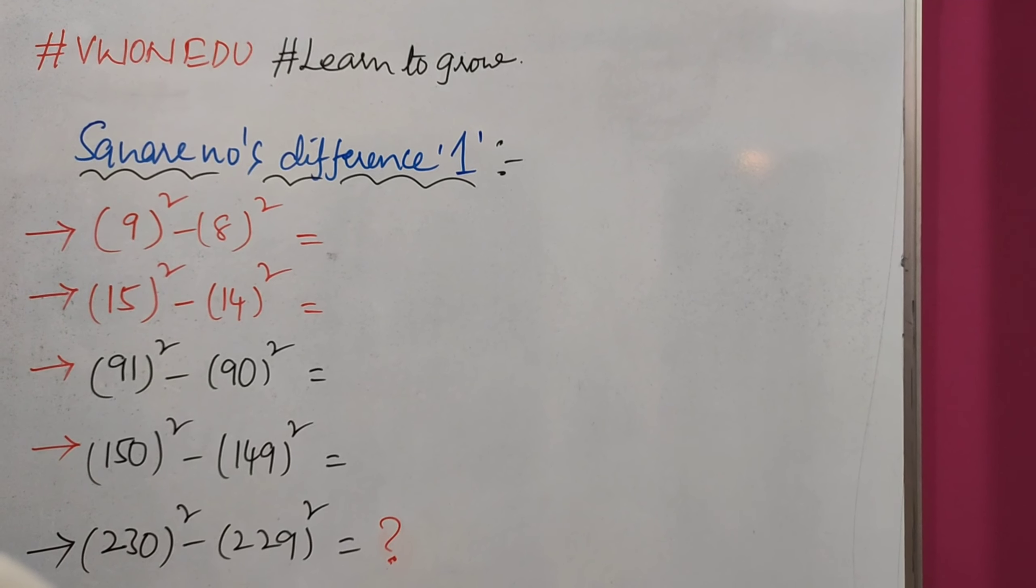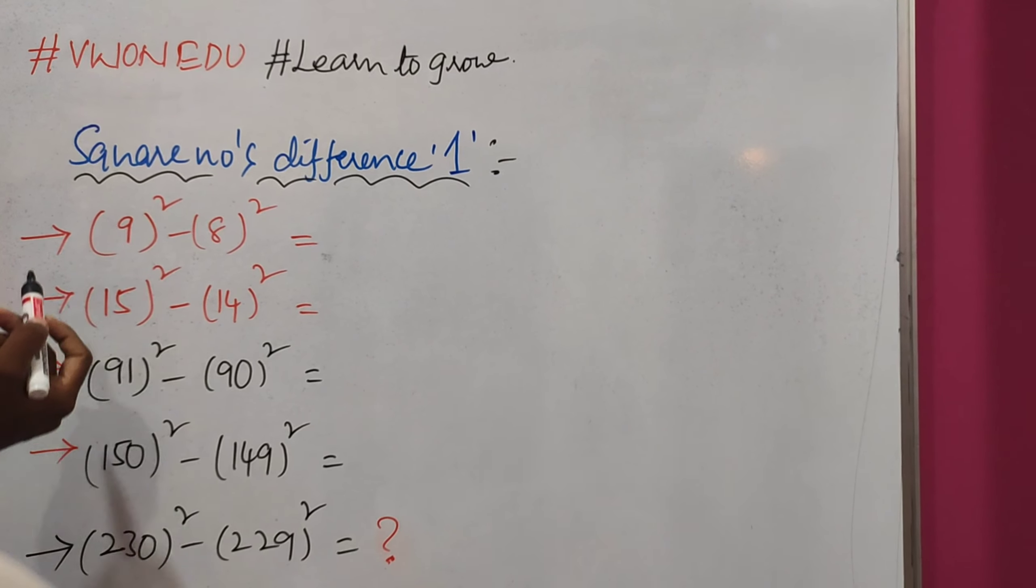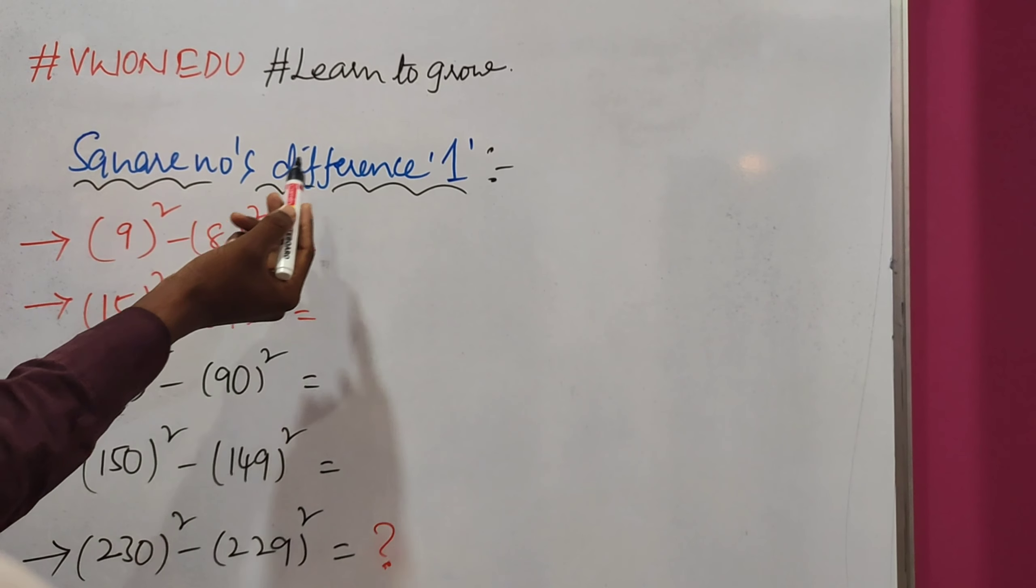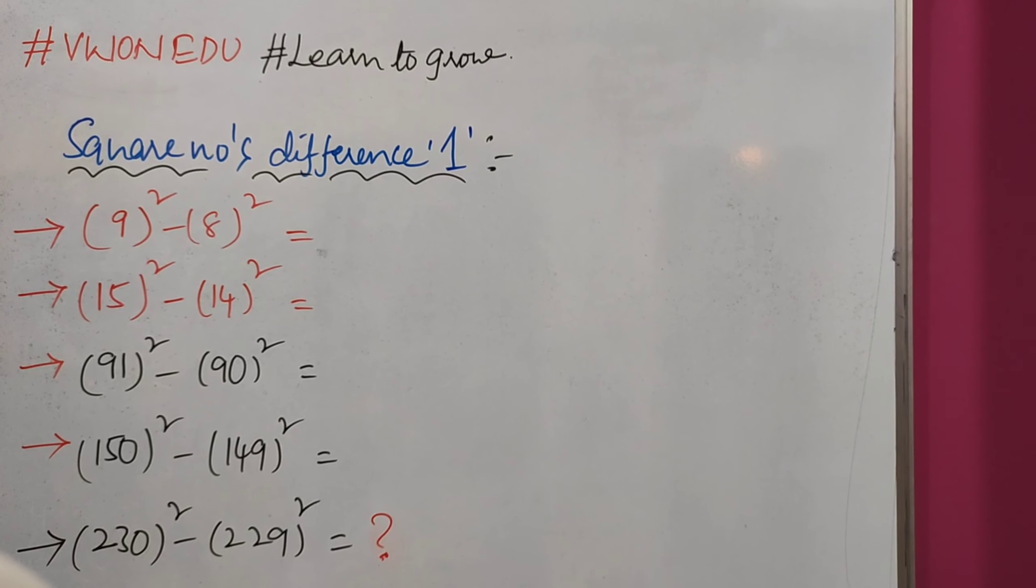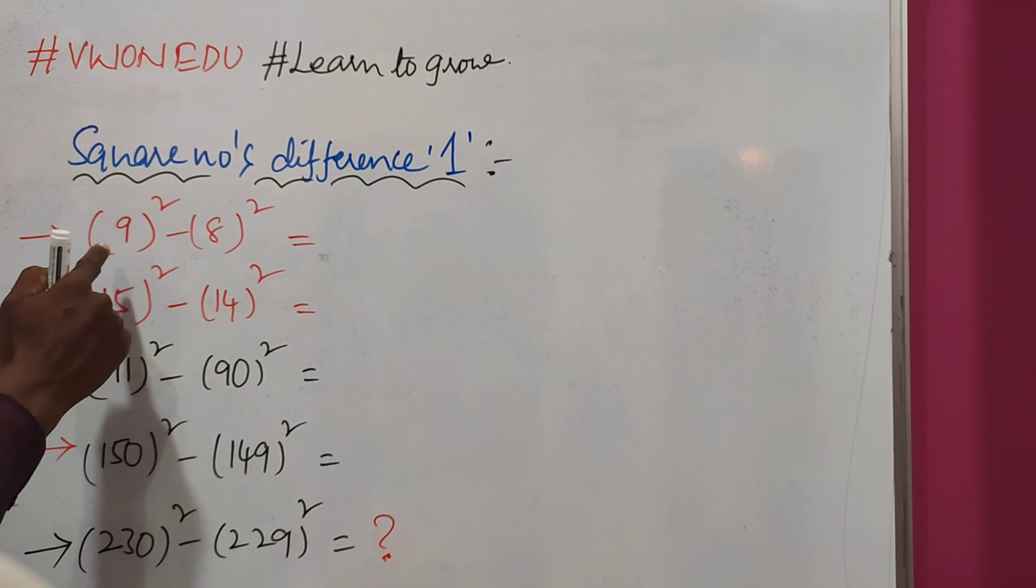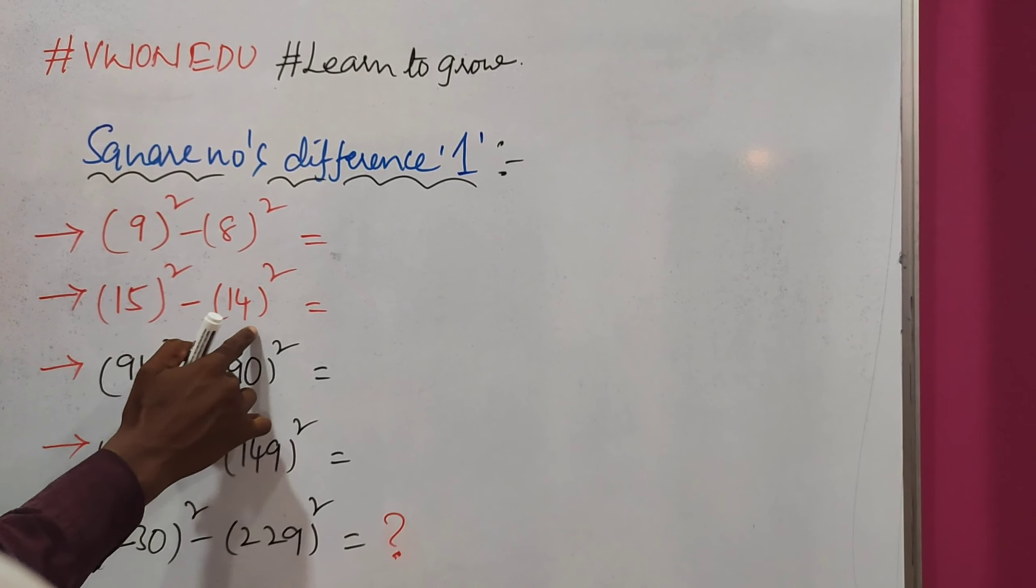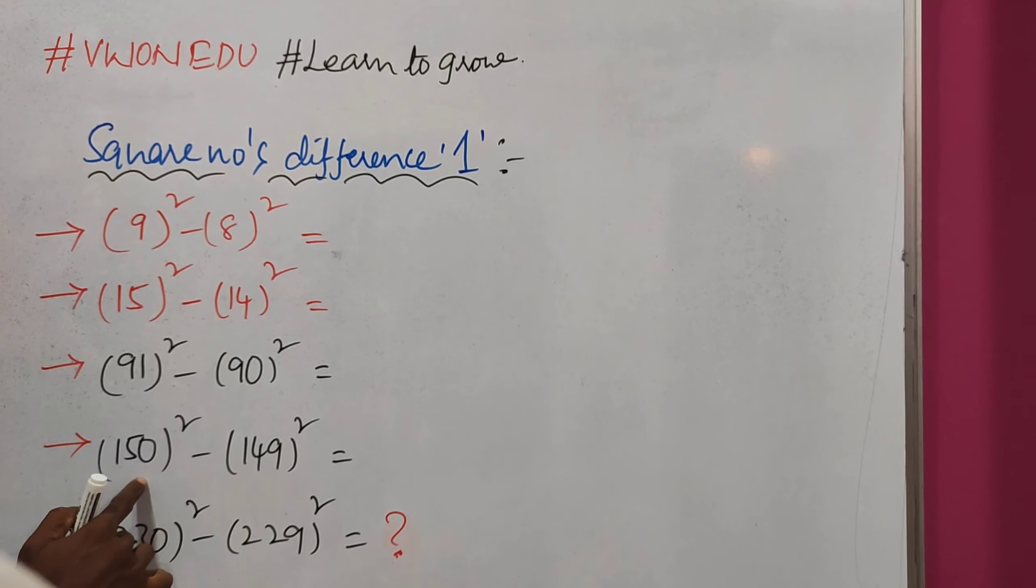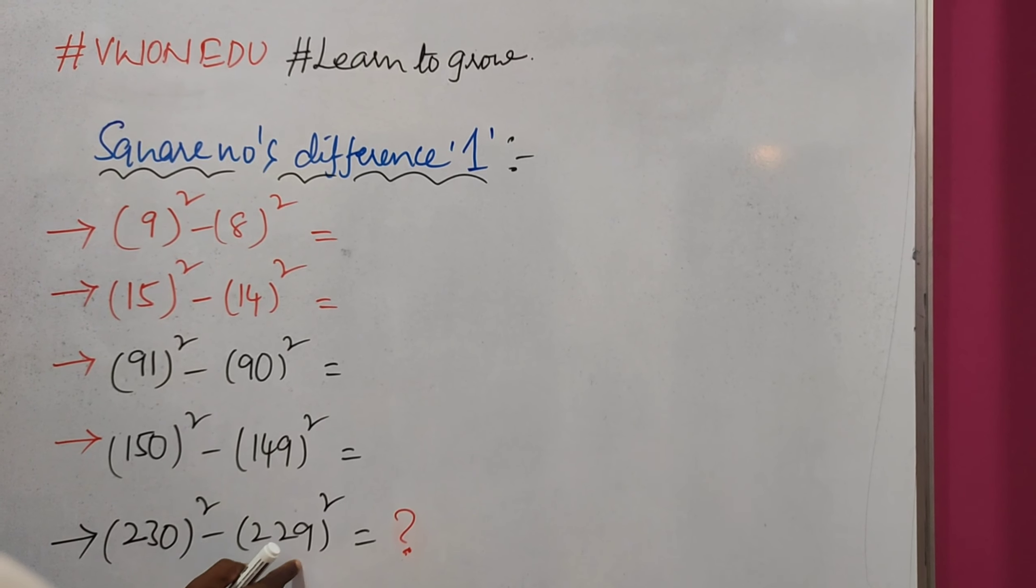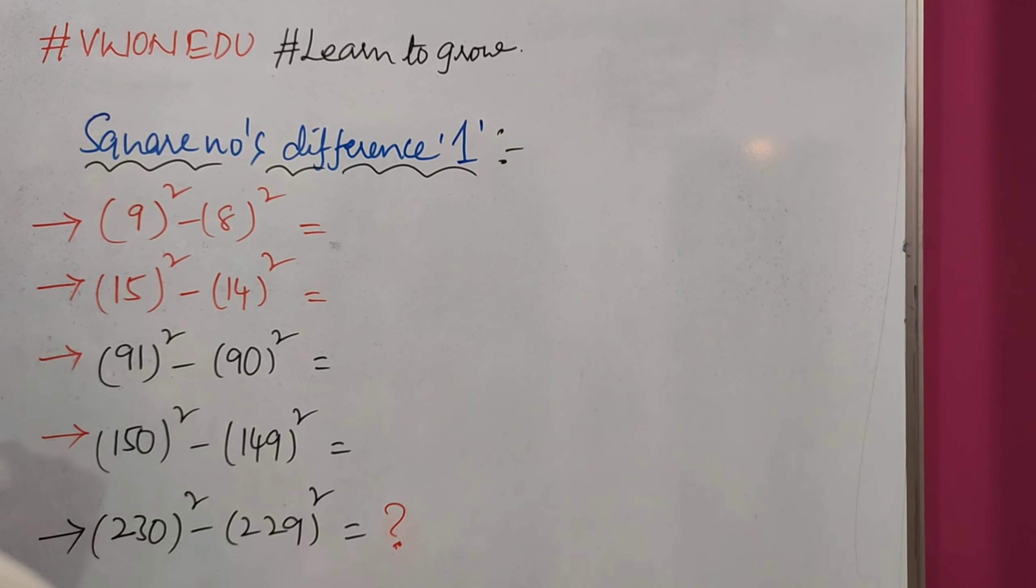Hello everyone, welcome to our channel We Want Education. Today we will discuss square numbers difference of 1 in an easy way. See: 9 and 8, 15 and 14, 91 and 90, 150 and 149, 230 and 229. All these numbers have a difference of 1.